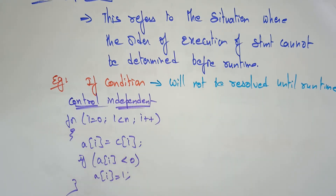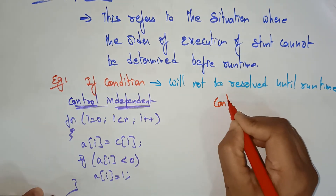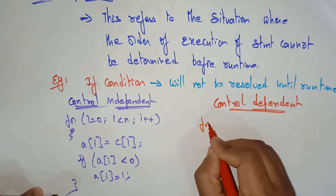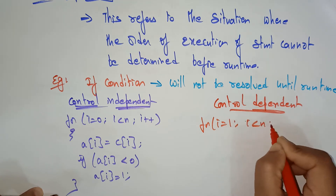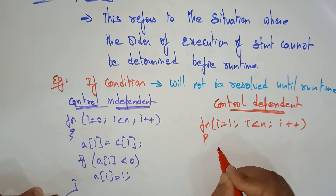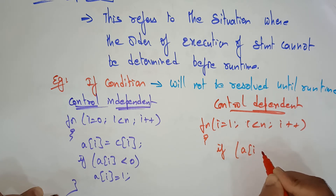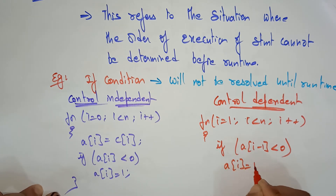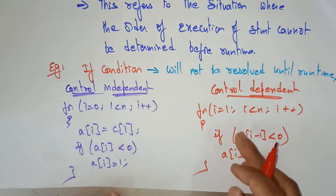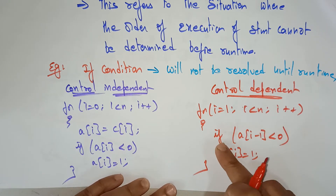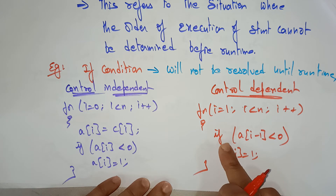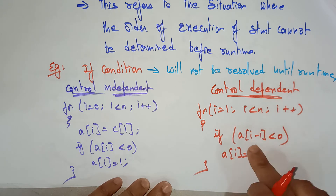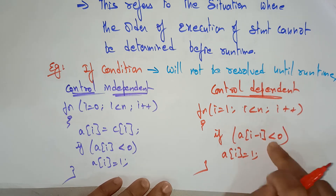Now let me take an example of control dependency. Control dependent: for i = 1, i < n, i++. Here, I am checking an if condition: if a[i-1] is less than 0, then a[i] = 1. Obviously, whenever this condition is true, we go inside the if condition and check. So if a[i-1] is less than 0, the control is dependent.